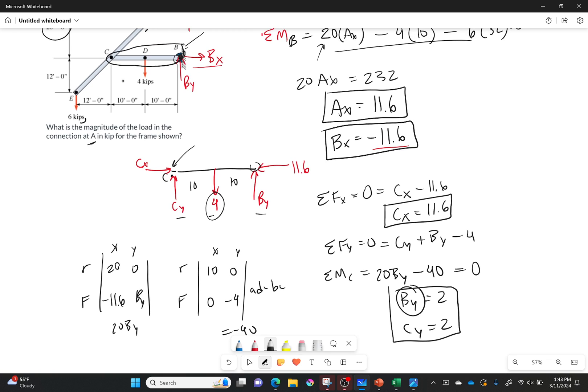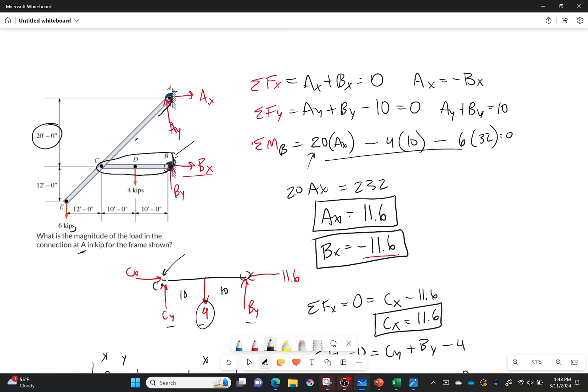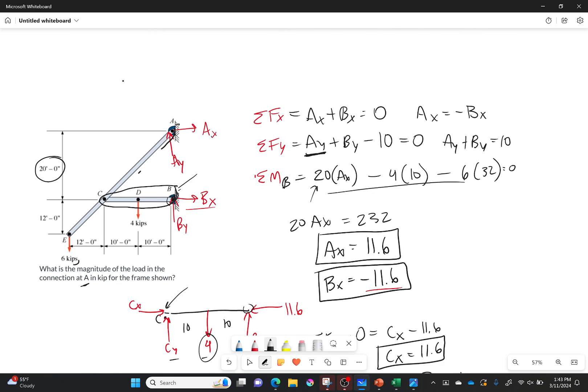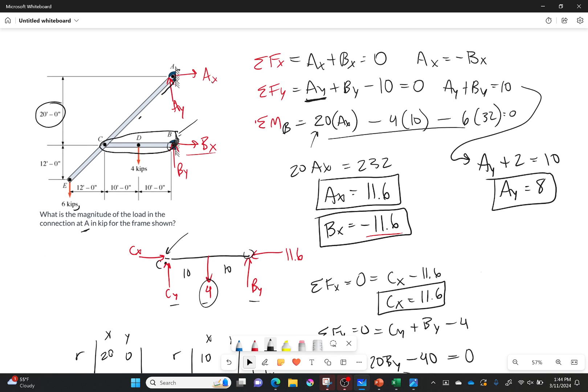Now since I know By, I only have one last unknown which is Ay. Since I know By is 2, I can solve for Ay. So Ay plus 2 is equal to 10. So Ay is therefore equal to 8. And that gives me all the forces for this particular problem. Point A, B, and C. So that's it. Hopefully this helps you. Thanks for watching. I'll see you all next time. Bye bye.